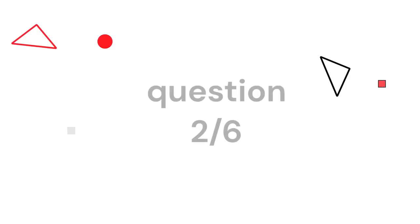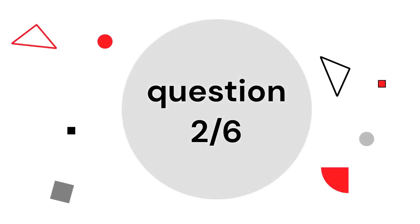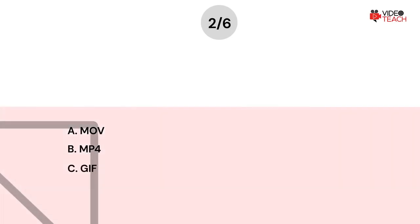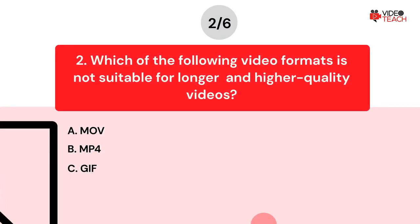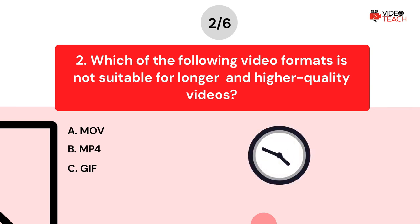Question number two. Which of the following video formats is not suitable for longer and higher quality videos? Option A, MOV. Option B, MP4. Option C, GIF. Now you have about 15 seconds to think about your answer.